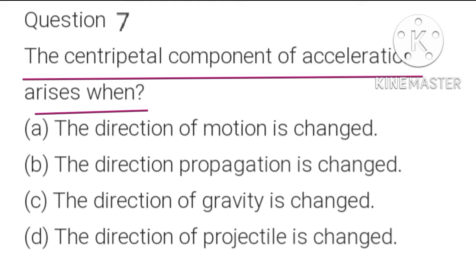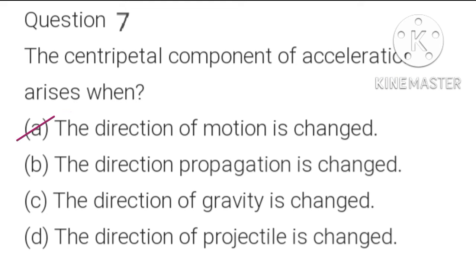Question 7: The centripetal component of acceleration arises when: A) the direction of motion is changed, B) the direction of propagation is changed, C) the direction of gravity is changed, D) the direction of projectile is changed. We know that when a body moves in a circular path, if the direction of motion of the body is changed, then the centripetal component of acceleration arises. So A is the correct option: centripetal acceleration arises when the direction of motion is changed.